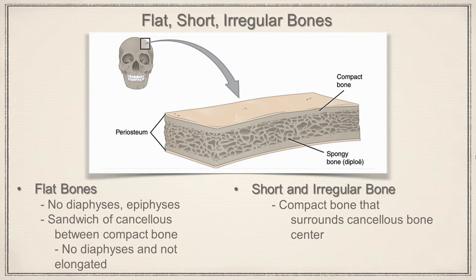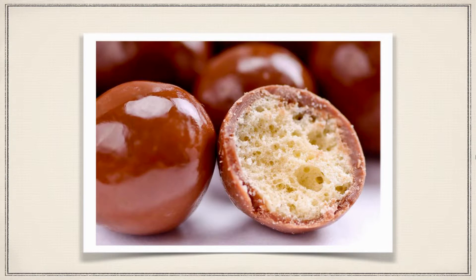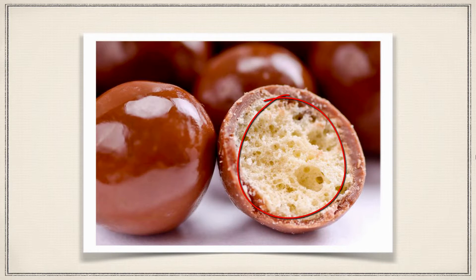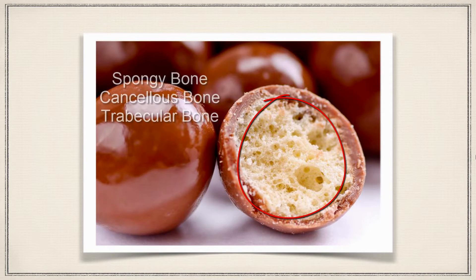Here we have compact bone that is going to surround a cancellous bone center. If you've ever eaten a Whopper or malted milk ball — the chocolate on the outside represents compact bone, which is dense in appearance. The center is more airy and spongy, and that contains the spongy bone, which we also call cancellous bone or trabecular bone.